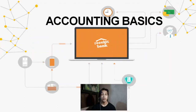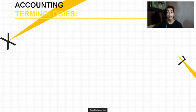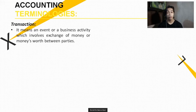Hey guys, now that we have defined market identification and analysis and financial analysis, let us discuss accounting basics. But before we go to accounting basics, let me first share the common accounting terminologies that we will encounter in this topic. The first terminology is transaction — an event or a business activity which involves exchange of money or money's worth between parties.